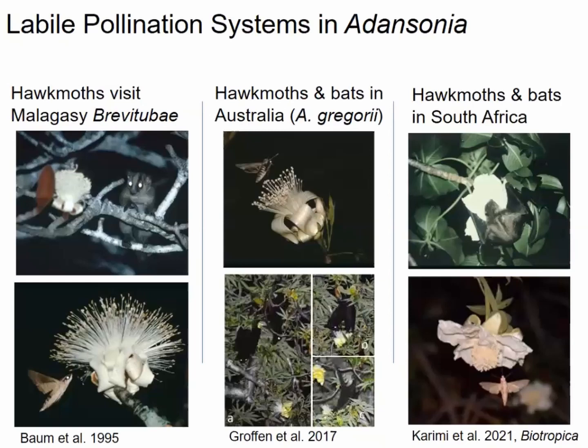Similarly, Australian boabs were thought to be primarily hawk-moth pollinated, but there's now evidence that bats serve as primary pollinators in at least certain populations — confirmed through visitation and pollination studies. And in South Africa, the African baobab, traditionally considered bat-pollinated, has evidence of hawk moths visiting in certain populations — which I'll return to in Part 3.